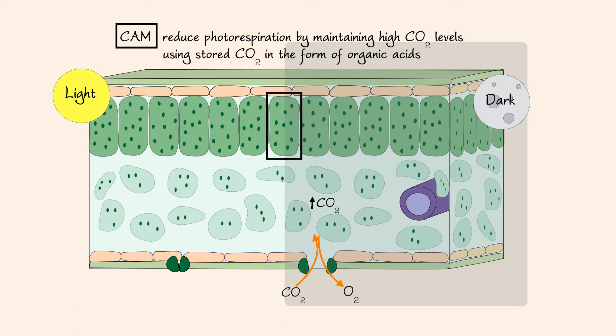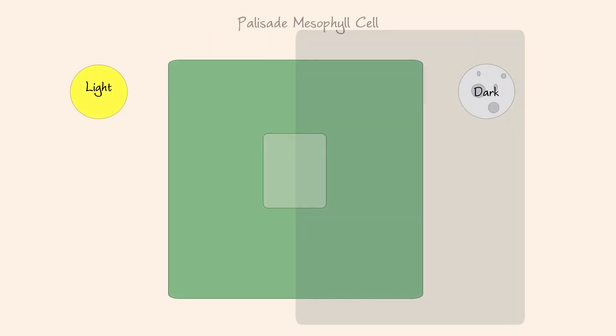Now let's focus on a palisade mesophyll cell. During the night, carbon dioxide is picked up by the enzyme PEP carboxylase and is attached to a molecule called PEP. The resulting molecule of oxaloacetate is converted to an organic acid. The organic acid is stored in the vacuole until light becomes available.